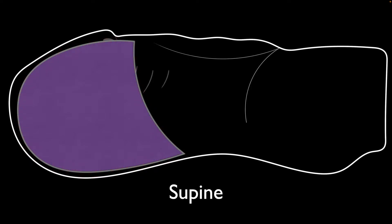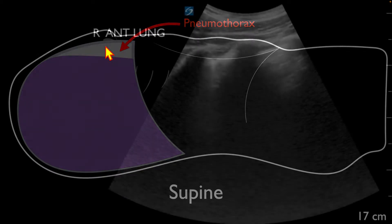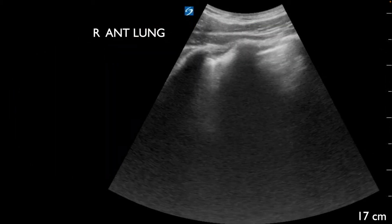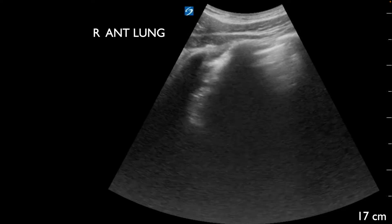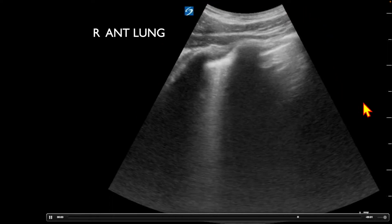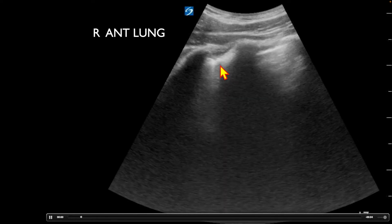When a pneumothorax develops in a supine patient, it's typically going to be anteriorly that we see this. We'll see that there is a separation of the lung from the anterior wall, as air will typically collect anteriorly. So when we look at this case and go through the different views, right here we have the anterior right lung — superior towards the head and inferior towards the feet. We see a rib here, rib here, and rib here, and we're going to evaluate these pleural lines.